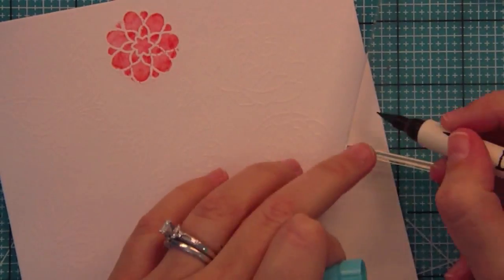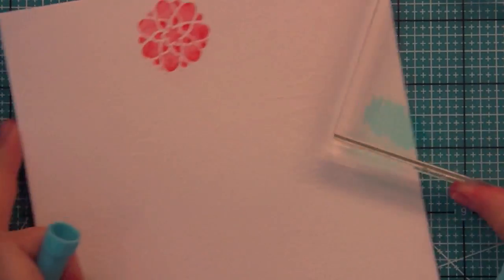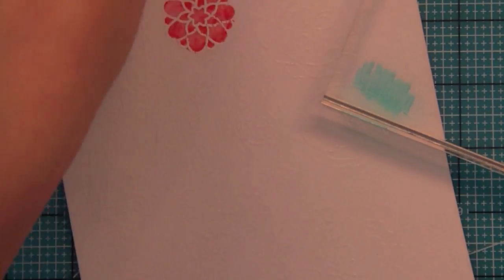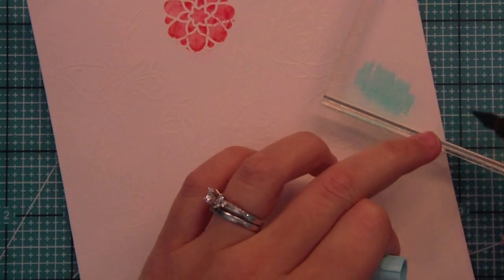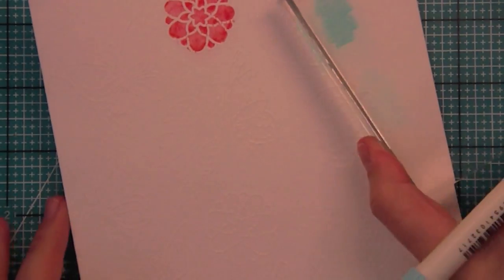Right here I have this little acrylic block and what I'm doing is I'm scribbling a dark blue and a light blue on here. I think it's broken china and tumbled glass which are my two favorite distressing blues and so I'm just scribbling right on here and creating a palette.